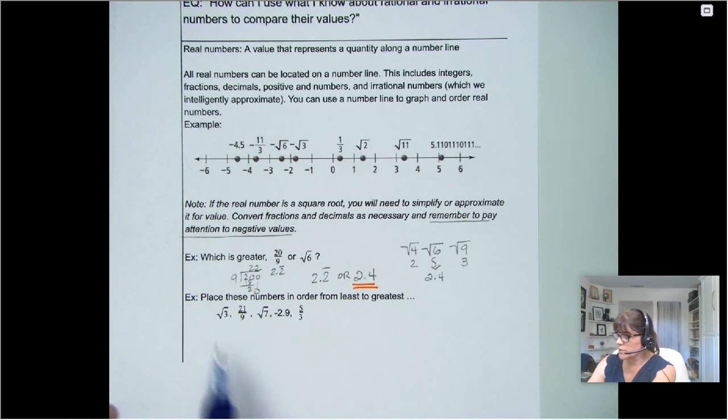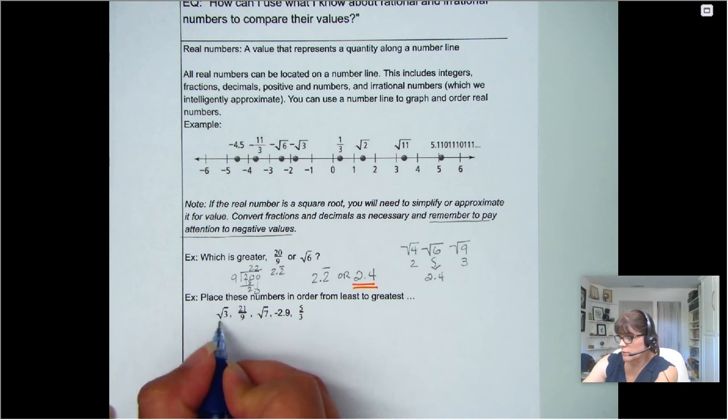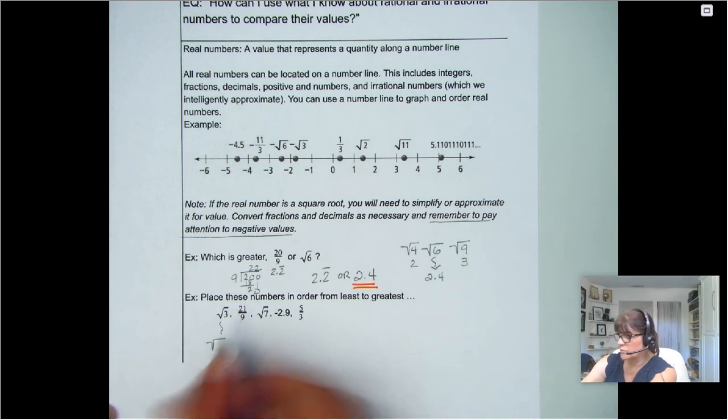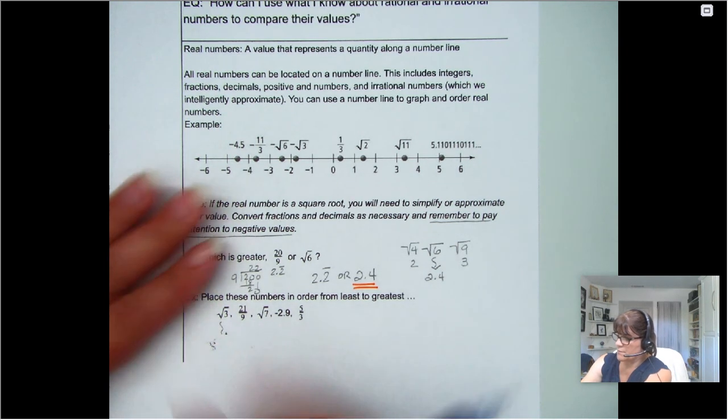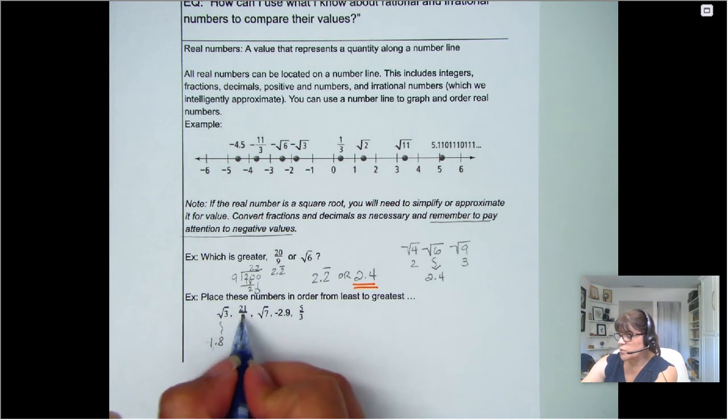Now, what if I had a whole bunch of numbers and I need to figure out which these are from least to greatest? Well my best option is going to be to figure out about what each one is worth. The square root of 3 is just a little less than the square root of 4. So I might say that that's about 1.7 or 1.8.